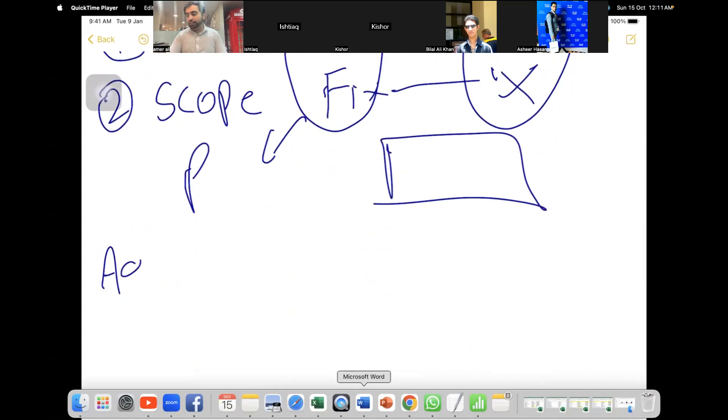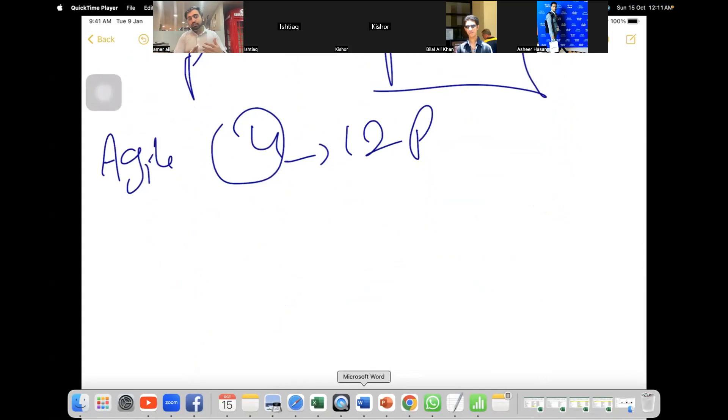In Agile, we discussed there are four values of Agile, the heart and soul of Agile, and then 12 principles of Agile. Then we discussed there are multiple practices among which Scrum is the most important one.